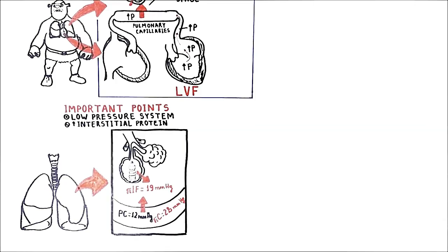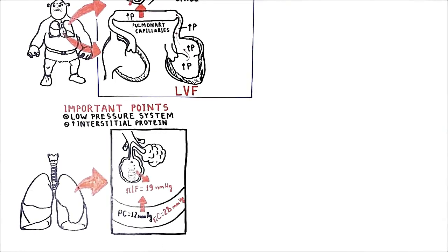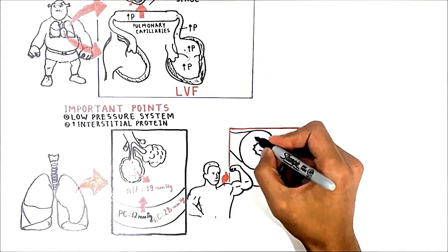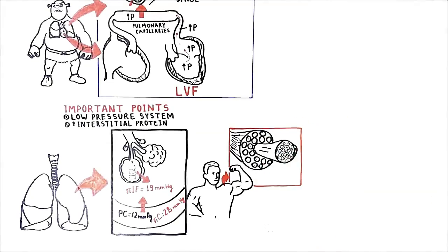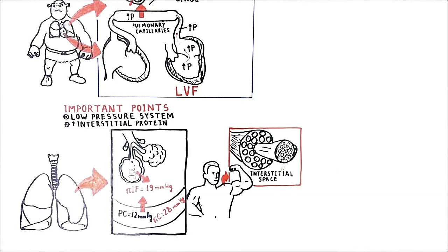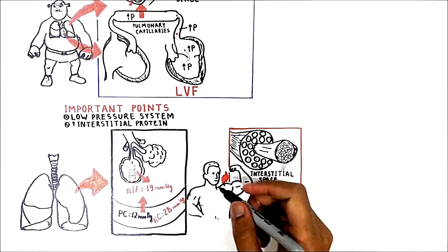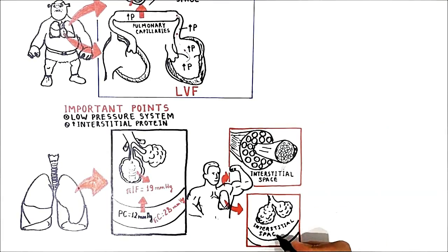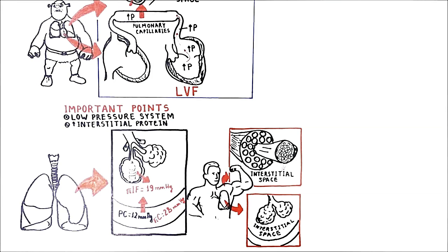If you look at other places in the body — for example, skeletal muscle — edema develops there more rarely than it does in the lungs. This is because the interstitial space between myocytes is very tight, with very little space available for fluid to accumulate. In contrast, the interstitial space in the lungs is wide, and it can even expand further because normally the alveoli are empty and the interstitium can expand to fill that emptiness.